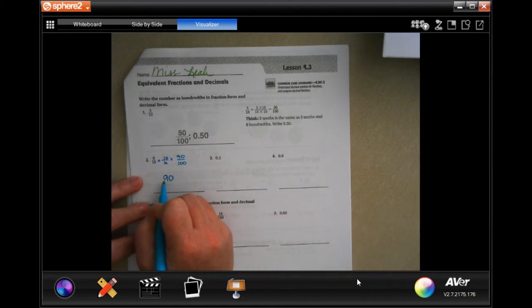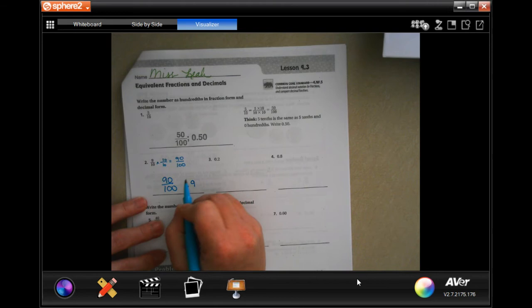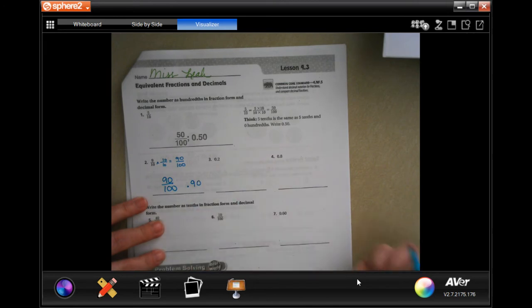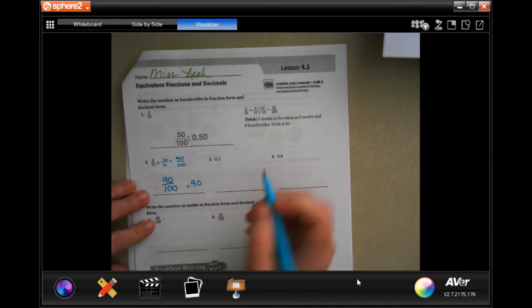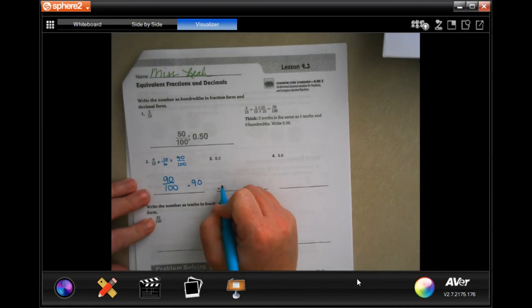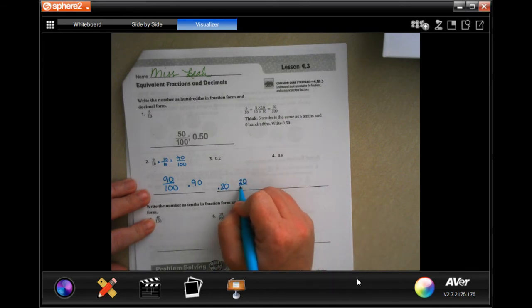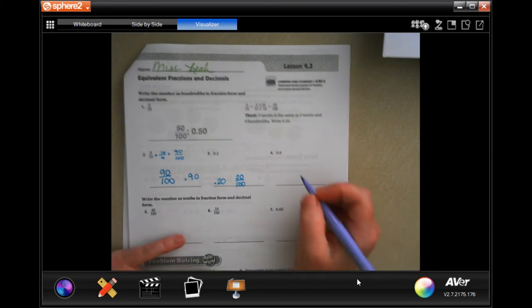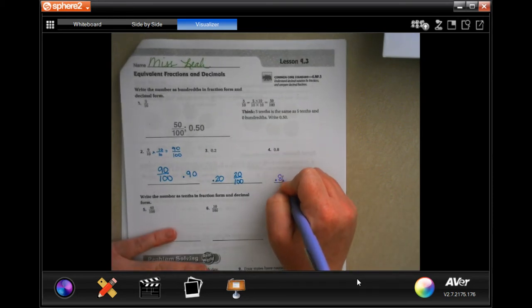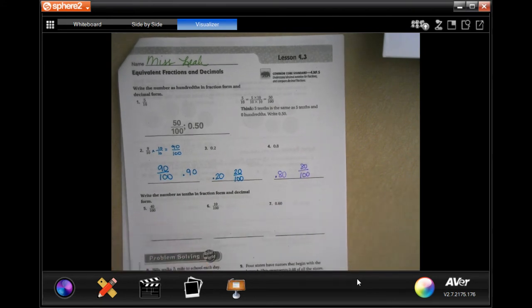Instead of 0.9 in the tenths place, we would put 0.90, which puts the zero in the hundredths place. It's that easy. So 0.2, we're going to put that as 0.20, which puts the zero in the hundredths place, or 20 over 100. Again, 0.80 or 80 over 100.